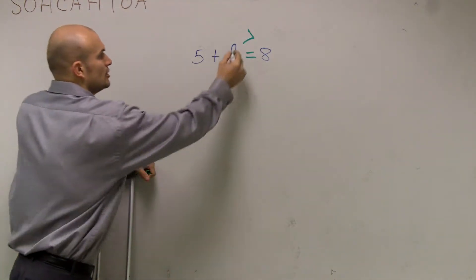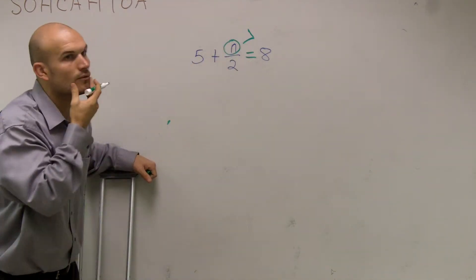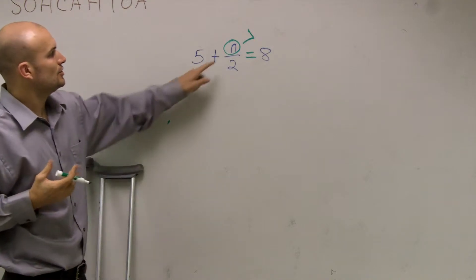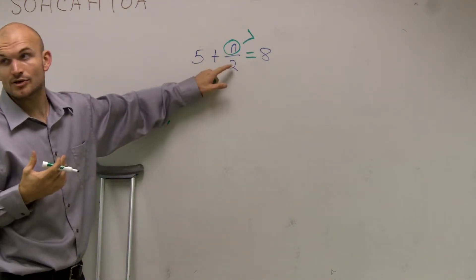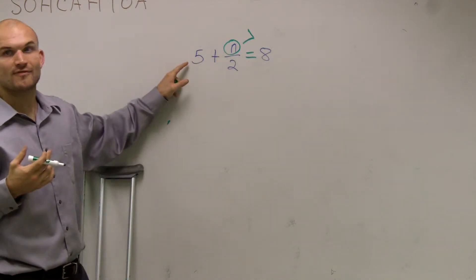Remember, to solve an equation, you can circle your variable and say, alright, what is happening to my variable? Well, you have your variable as being divided by 2 and it's being added by 5.